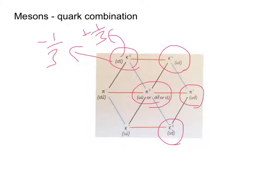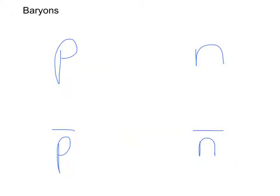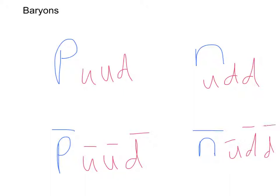And you can do this for the other particles. The baryons, things like protons and neutrons, are made up of three quarks. Our proton is up, up, down, neutron is up, down, down, anti-proton anti-up, anti-up, anti-down and anti-neutron anti-up, anti-down, anti-down.